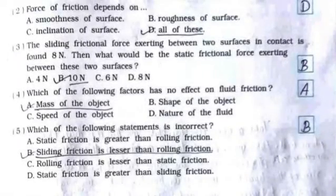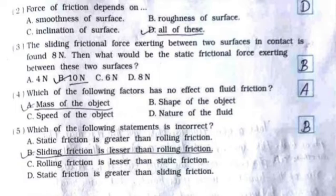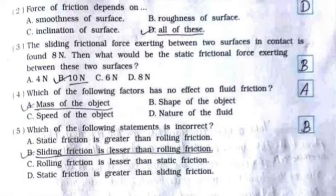Number three: the sliding frictional force exerted between two surfaces in contact is found to be 8 newtons — what should be the static frictional force between these two surfaces? The answer is option B, 10 newtons. Number four: which of the following factors has no effect on fluid friction? The answer is option A, mass of the object.